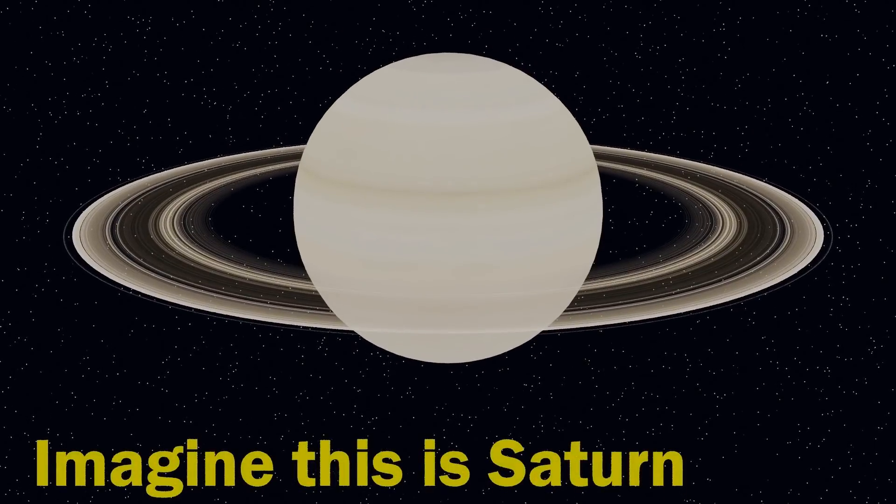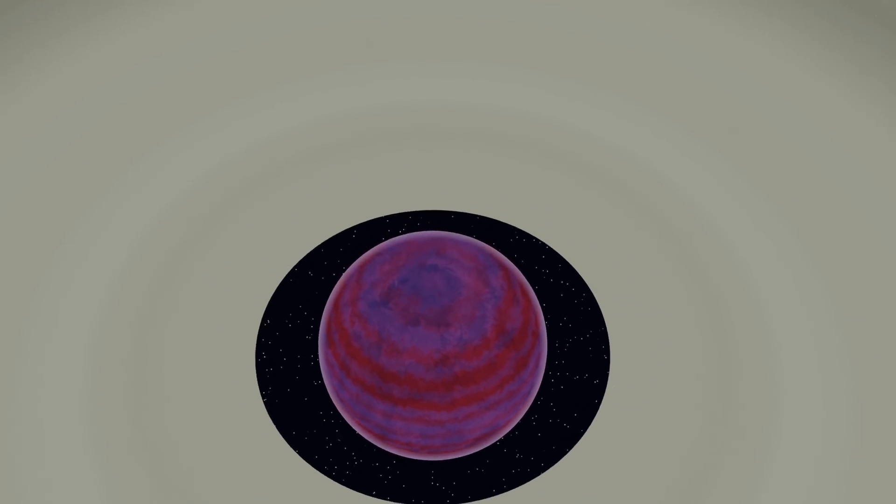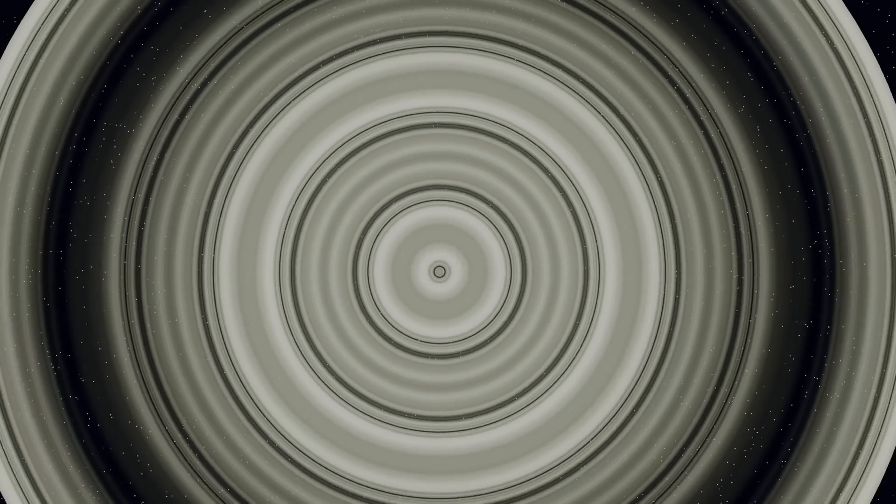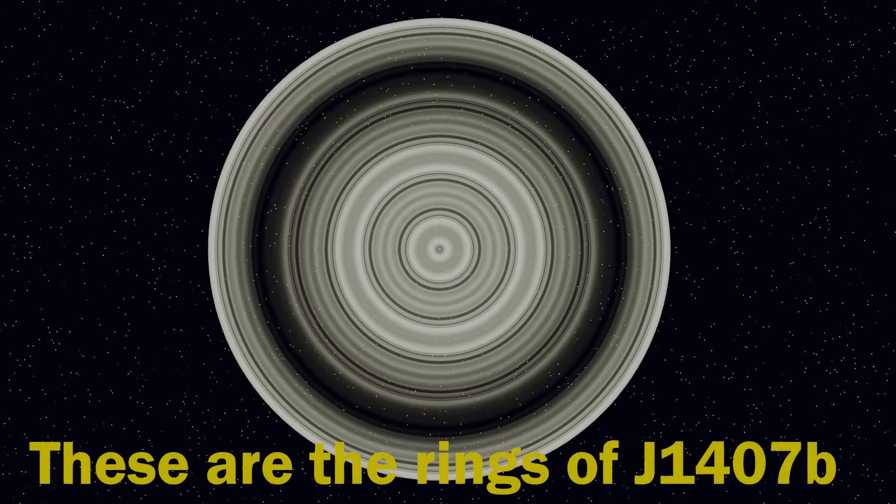Next on the list we come to the jauntily named J1407b, or as it has been called, Super Saturn. This is a planet orbiting the star 1 swasp J1407, located in the Centaurus constellation about 434 light years away. This massive planet is a gas giant, probably about 13 to 26 times the mass of Jupiter, and that's definitely putting it in the brown dwarf territory. But what makes it so special is its ring system. The ring system of this planet stretches out with a diameter of about 180 million kilometers. That's larger than the orbit of Mercury. Comparing it to Saturn, the rings of J1407b would be this big.